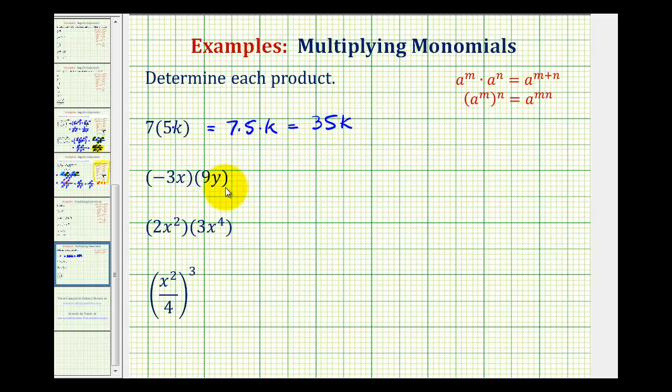Looking at the second example, we have negative three x times nine y. And again, negative three x means negative three times x, and nine y means nine times y. Because everything is connected by multiplication, we could change the order without changing the product. This is the commutative property of multiplication. So we could write this as negative three times nine times x times y, if that helps. And we can see the result would be negative 27xy.